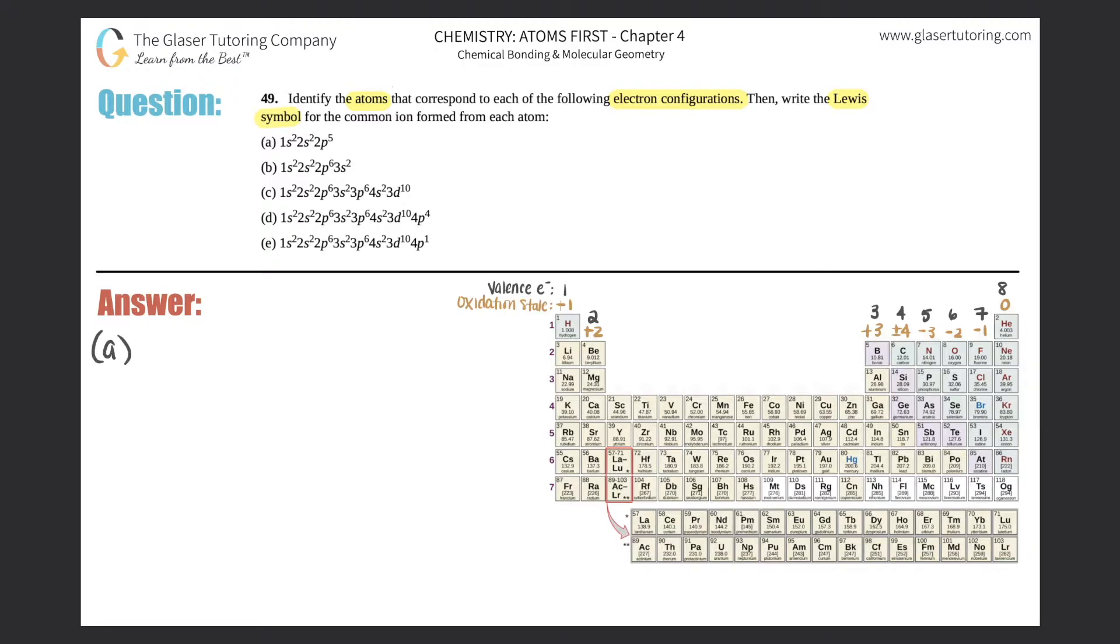So I'm just going to write a, b, c, d, and we'll put e over here. The first thing we have to figure out is what are the atoms that correspond with these electron configurations. Now they told us that they were atoms, which means that all the electrons that are counted for are going to be the true atom that's on the periodic table, so that means there's no charge.